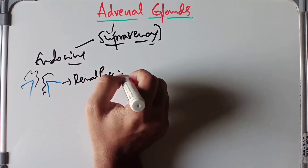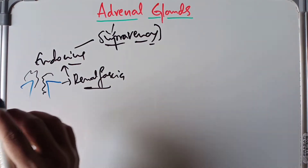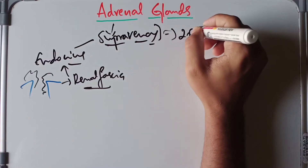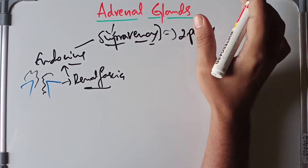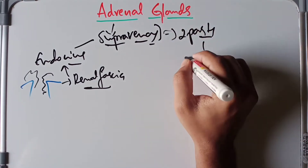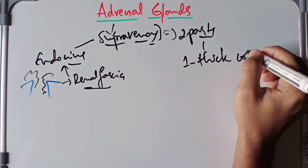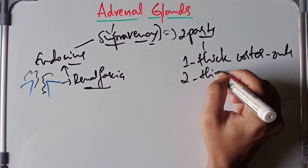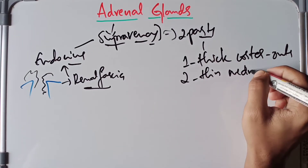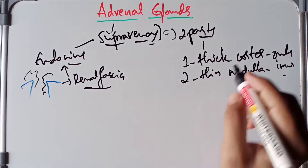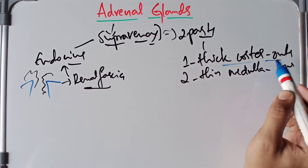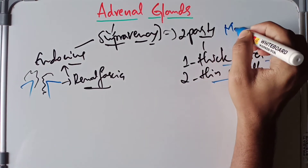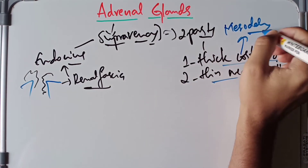Each gland consists of two parts: the first is the relatively thick outer cortex, and the second is the thin inner medulla located on the inner surface.